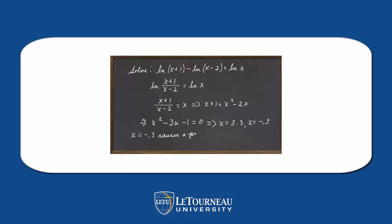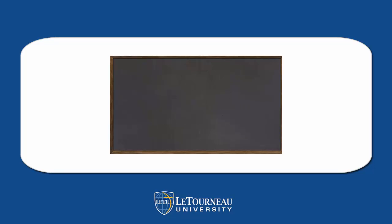When x equals minus 0.3, this causes a problem: x minus 2 would end up being less than 0. We can't take the logarithm of a negative number, so x equals minus 0.3 has to be discarded.